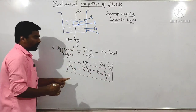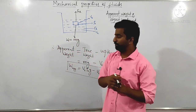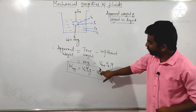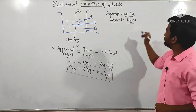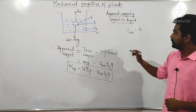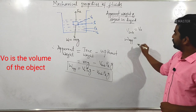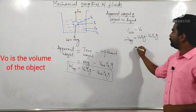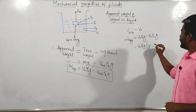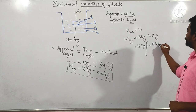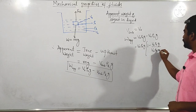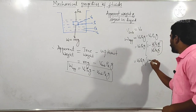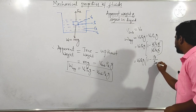We can use this formula to calculate the apparent weight of the object in liquid. If the object is completely immersed, the volume of the submerged object equals the volume of the object. So apparent weight equals V₀ρ₀g minus V₀ρ_l×g. Taking V₀ρ₀g as common, we get V₀ρ₀g multiplied by (1 minus V₀ρ_l×g divided by V₀ρ₀×g). V₀ and g cancel out.